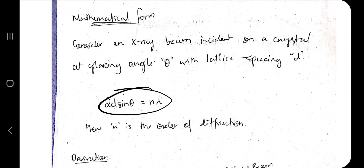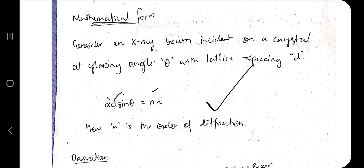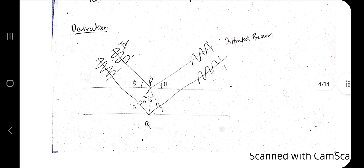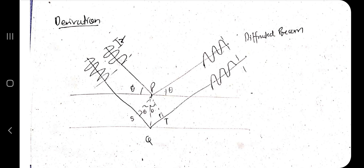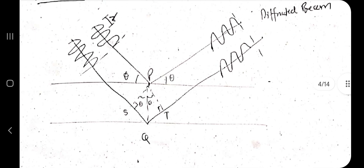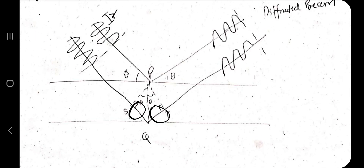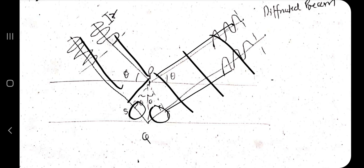The formula to remember is: 2d sinθ = nλ, where d is the interplanar spacing, θ is the Bragg angle, n is the order, and λ is the wavelength. For the derivation: two rays come in at the same angle. The extra distance traveled by the second ray is the path S₂Q plus QT, since the first portions of both paths are equal.